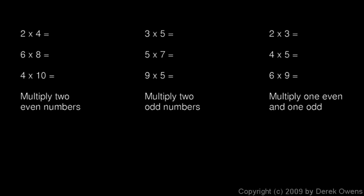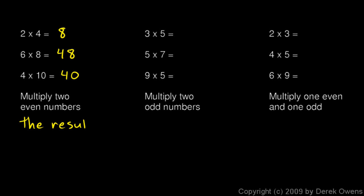Again, some simple examples — you're looking for a pattern. 2 times 4 is 8. Note that we have two even numbers multiplied together and the result is even. That will be the case for all of these: 6 times 8 is 48, the result is even; 4 times 10 is 40, again the result is even. If you multiply two even numbers, the result is even.